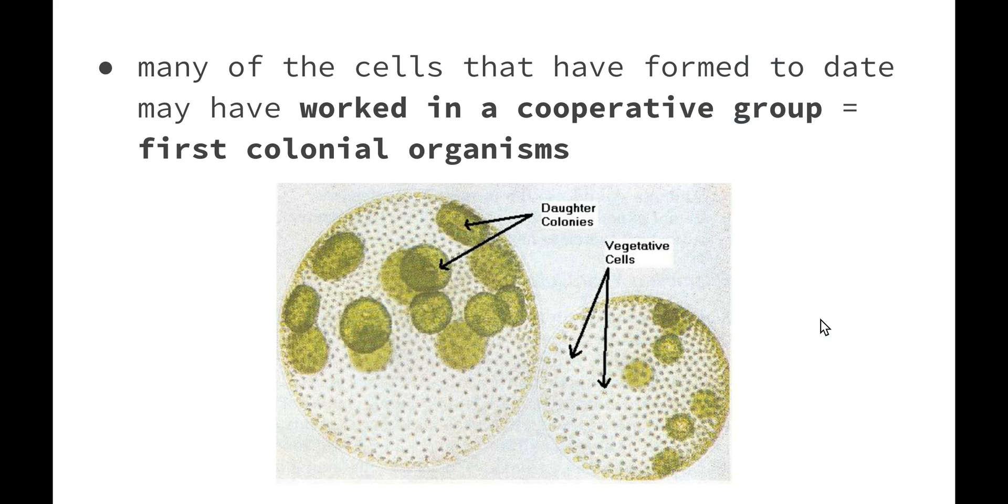Many of the cells that have formed to date may have then worked together in a cooperative group and this would have led to our first colonial organisms. Organisms were working together, different organisms within the group were carrying out different functions and this would have resulted in a colony-type relationship where they were all helping each other out.